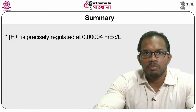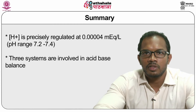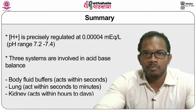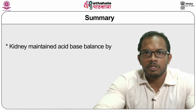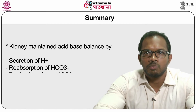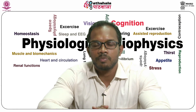In summary, H+ ion is precisely regulated in the body. There are three systems involved in acid-base balance: body fluid buffers which act within seconds, the lung which acts within seconds to minutes, and the kidney which acts within hours to days. The kidney maintains acid-base balance by secretion of H+ ions, reabsorption of bicarbonate ions, and production of new bicarbonate. The kidney also excretes non-volatile acids. I hope you have learned about acid-base balance. Thank you.